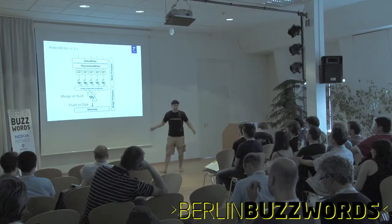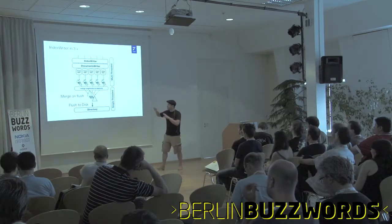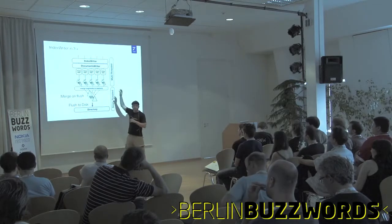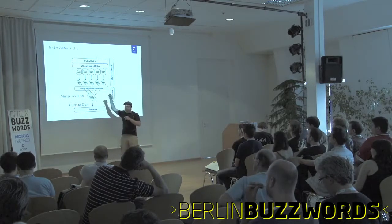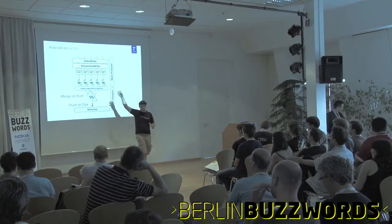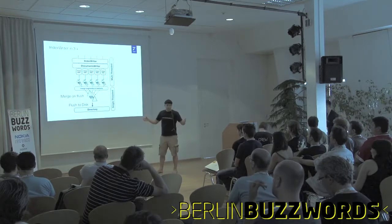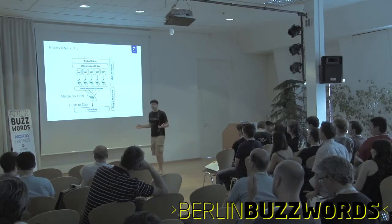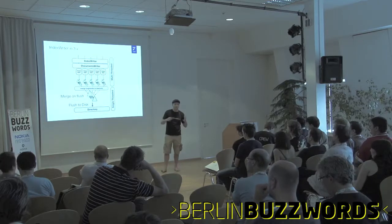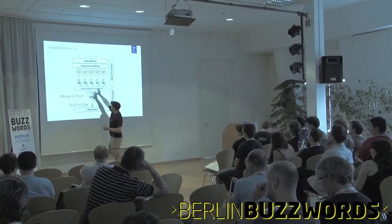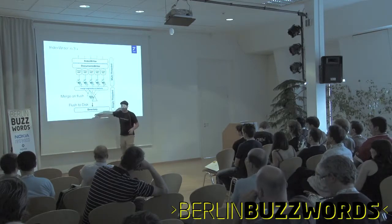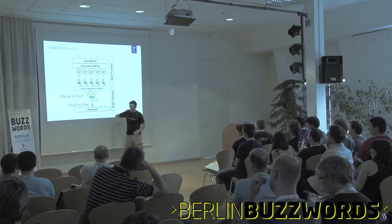I first want to show you how the Lucene indexer worked until 3.x. There's index writer on top. There's documents writer. Documents writer takes, for each thread coming in, a thread state. And that thread state builds a little in-memory segment. There's a setting, max RAM buffer. When the RAM buffer is full, Lucene merges those segments in-memory, just all the resorting, and flushes it to disk. And then it can continue indexing.